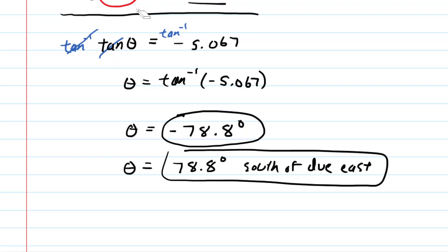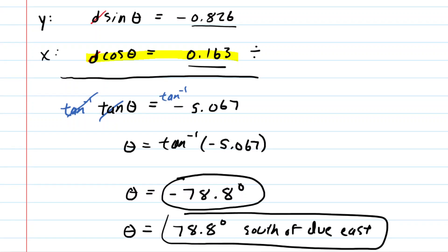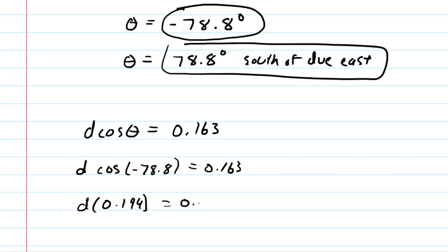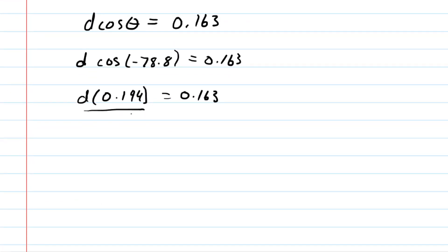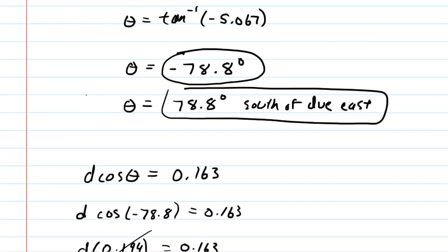Now we just need to find d — the magnitude of that second vector. We select one of our equations and plug in the angle of negative 78.8 degrees. The cosine of that angle is about 0.194, so we have D times 0.194 equals 0.163. Dividing both sides by 0.194, the final answer for the magnitude of the displacement of the second vector is 0.84 meters. This was the correct answer to part A, and the angle for part B was negative 78.8 degrees.